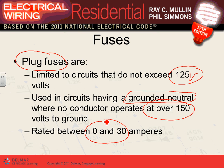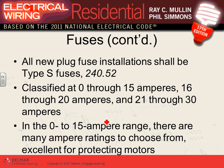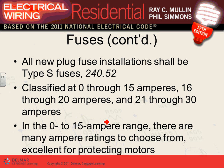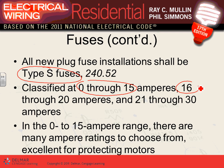All plug fuses have to have Type S fuses. Type S fuses classify you between 0–15 amps, 16–20 amps, and 21–30 amps. If you go with number 14 conductor, you're in the 0–15 category; number 12 goes with 16–20; number 10 goes with 21–30.